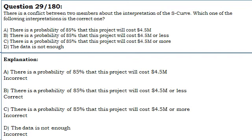Option A: There is a probability of 85% that this project will cost $4.5 million. Incorrect.